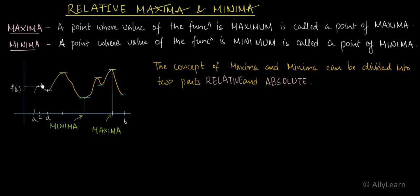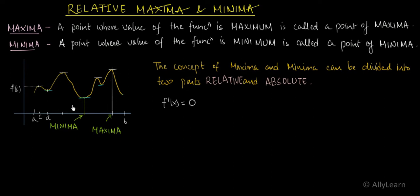So friends, to call a point relative maxima, it should be the largest in its surroundings; for relative minima, it should be the smallest. Now observe that at every relative maximum or minimum point, the slope — that is, the derivative of the function — appears to be 0, because all the tangents drawn at those points are parallel to the x-axis. So can we say that whenever there is a relative maxima or minima, the derivative of the function will be 0?